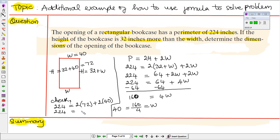On the right-hand side, 2 times 72 is 144, and 2 times 40 is 80. If we add them up, it will give us 224. So therefore, the dimensions—the width—that we just found will be the correct answer.